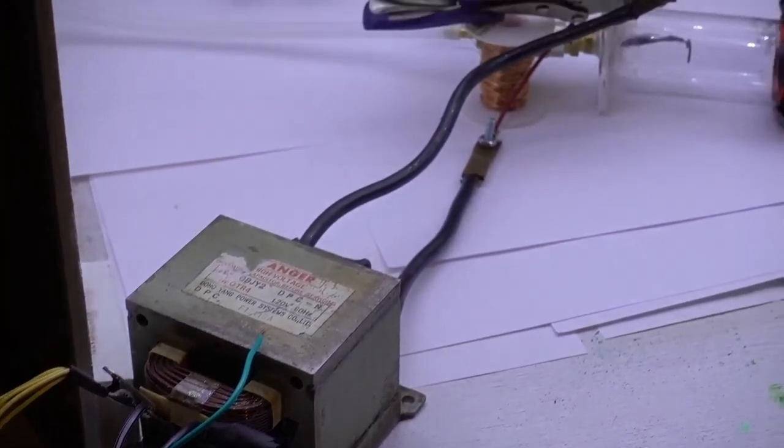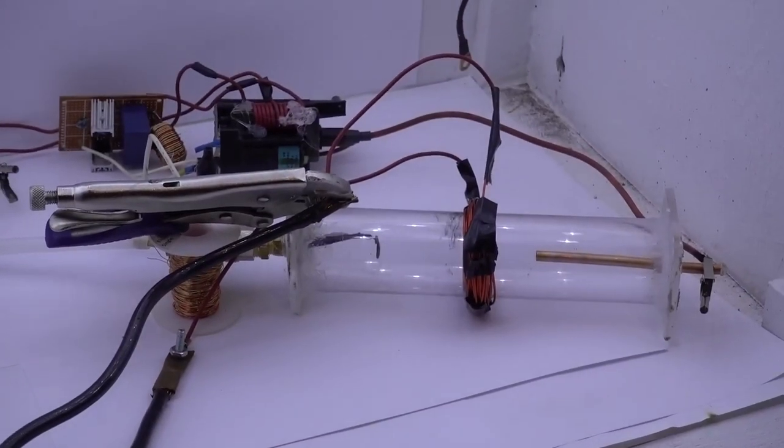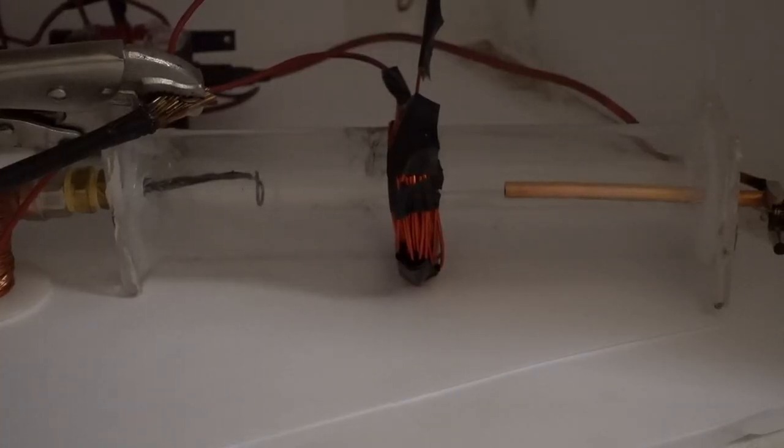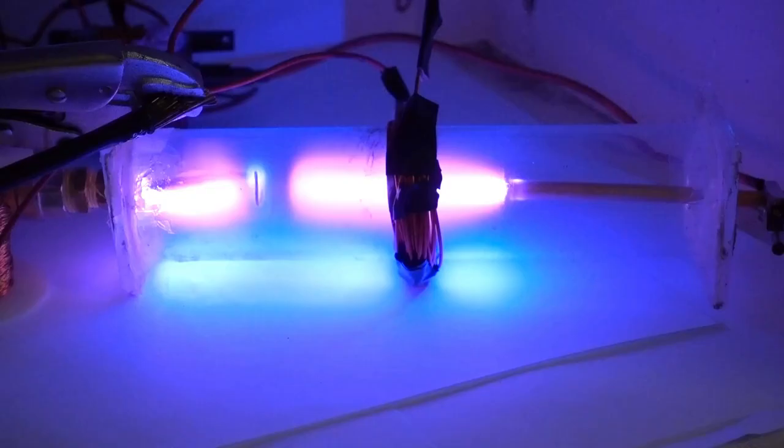So I'm going to be using a step down transformer to generate 30 amps through this coil. And hopefully that will be enough to compress this plasma.